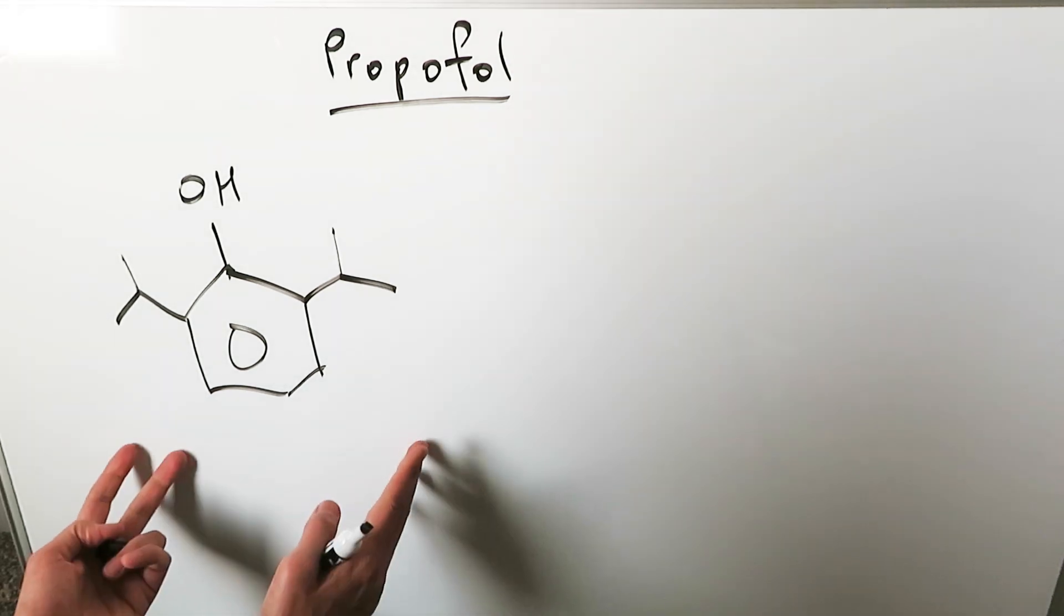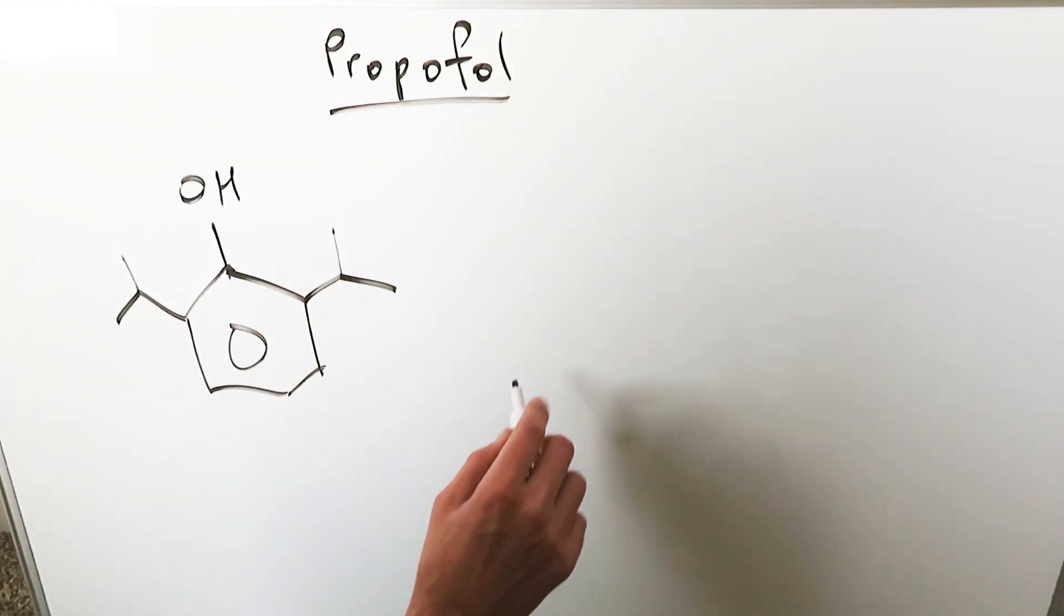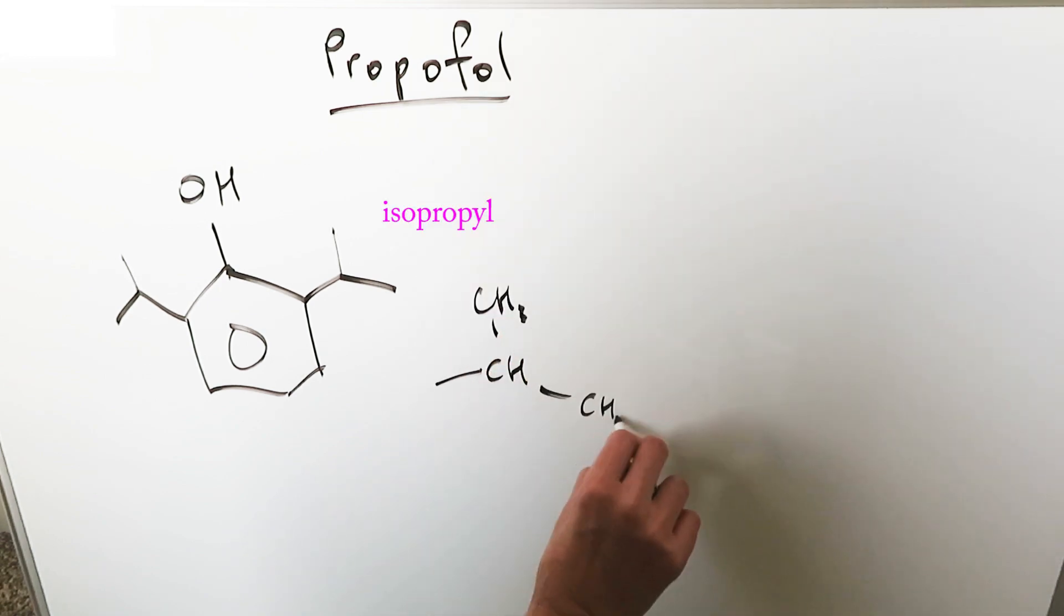This right here is the representation of it. I have a benzene ring, I have a hydroxyl group, and I have these items sticking out from the side. What are they? I'm looking here at a CHCH3. Isopropyl groups.